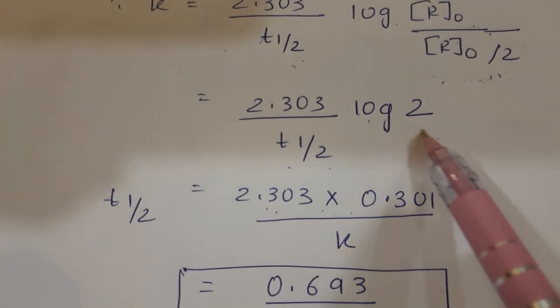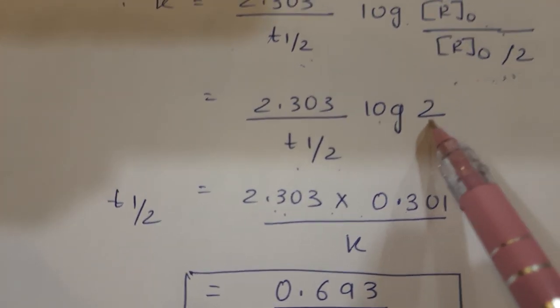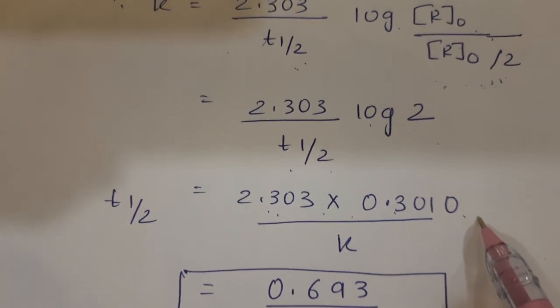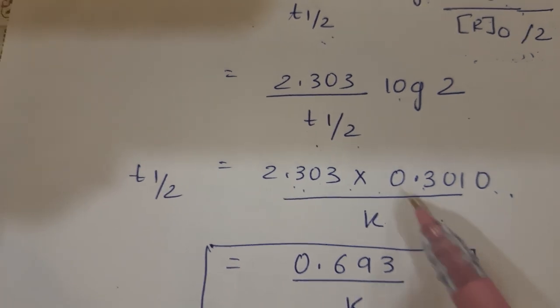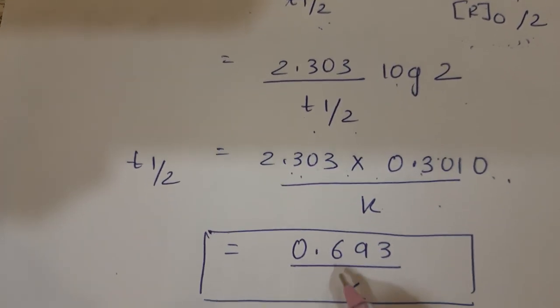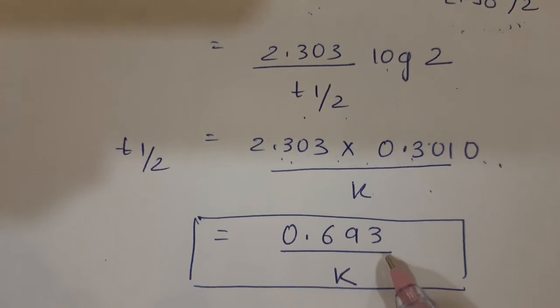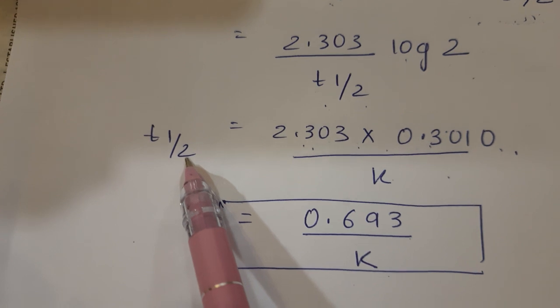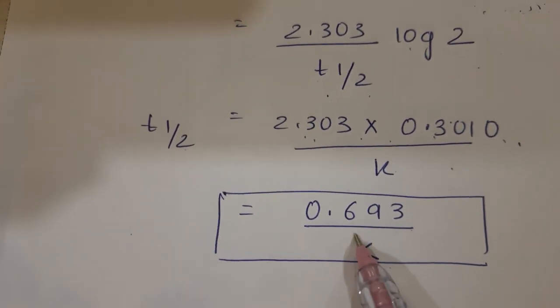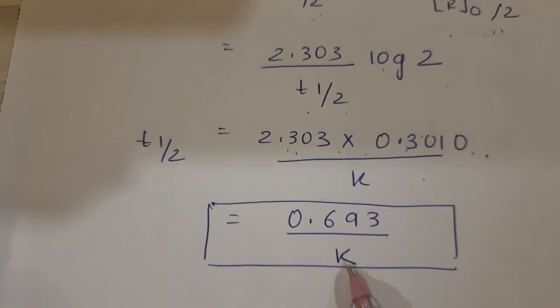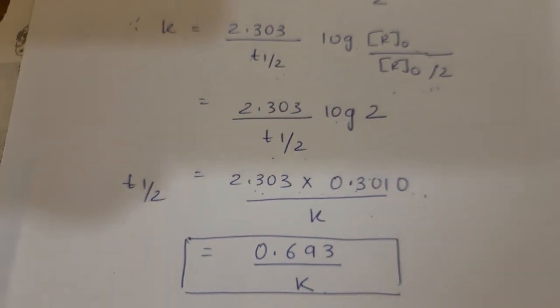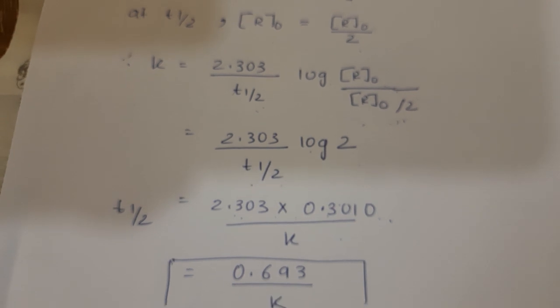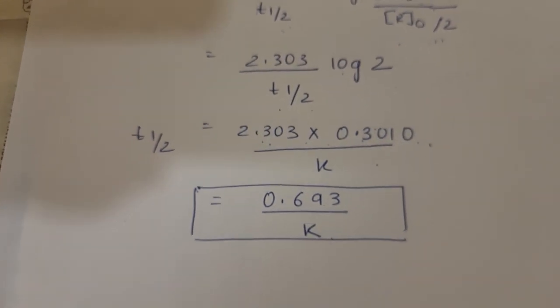Since log 2 is a single digit, it's 1 minus 1, which is 0.3010, divided by k. Multiply these two and you get 0.693 upon k. So for a first-order reaction, t half equals 0.693 upon k. In board exams, both the derivation and numerical problems will be asked.